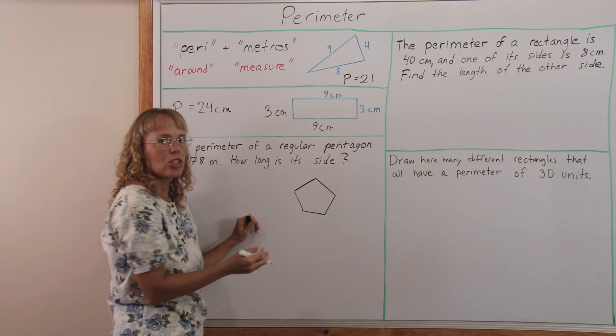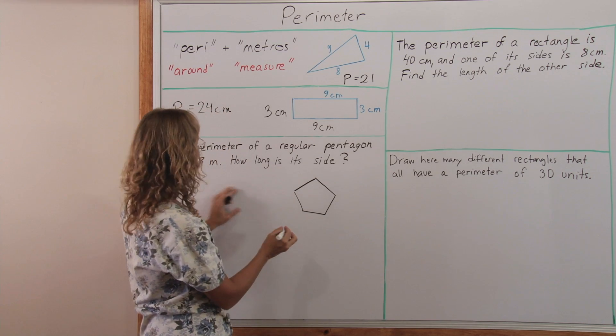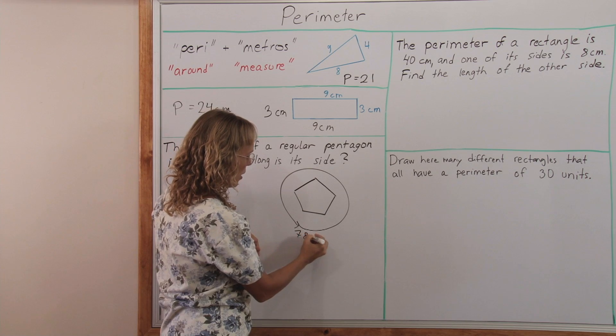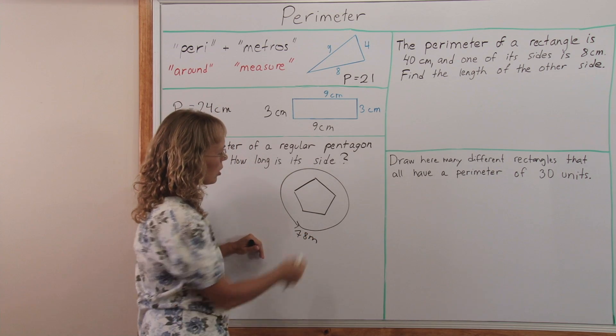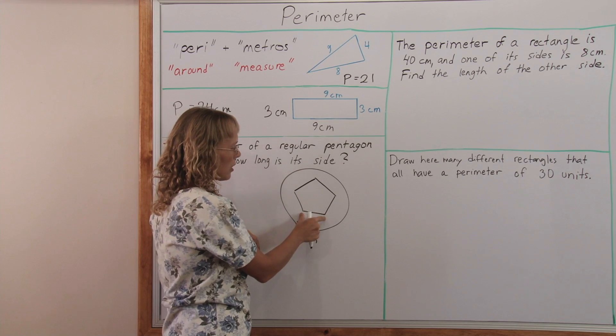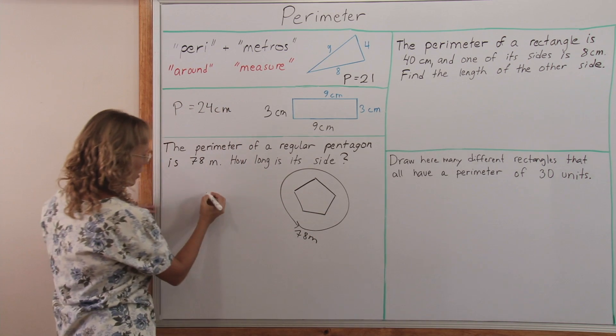It's important to sketch your figure in geometry problems. It helps you think and keep things straight. All the way around is 78 meters. And so one of these sides, since they're all equal, one of these sides must be 78 divided by 5. So let's divide.